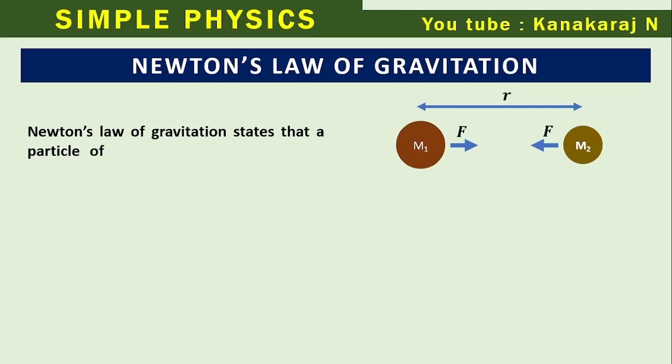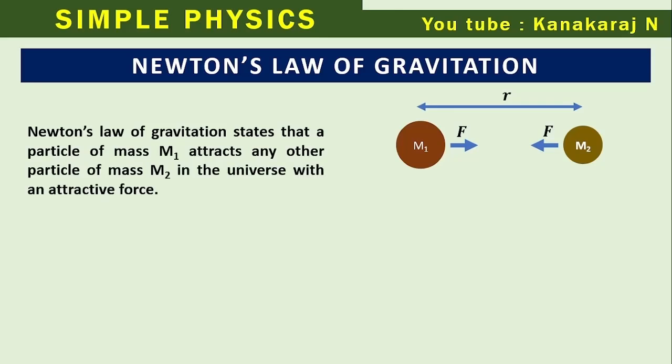Newton's law of gravitation states that a particle of mass M1 attracts any other particle of mass M2 in the universe with an attractive force. This force F is directly proportional to the product of their masses. Mathematically, F is directly proportional to M1 times M2.